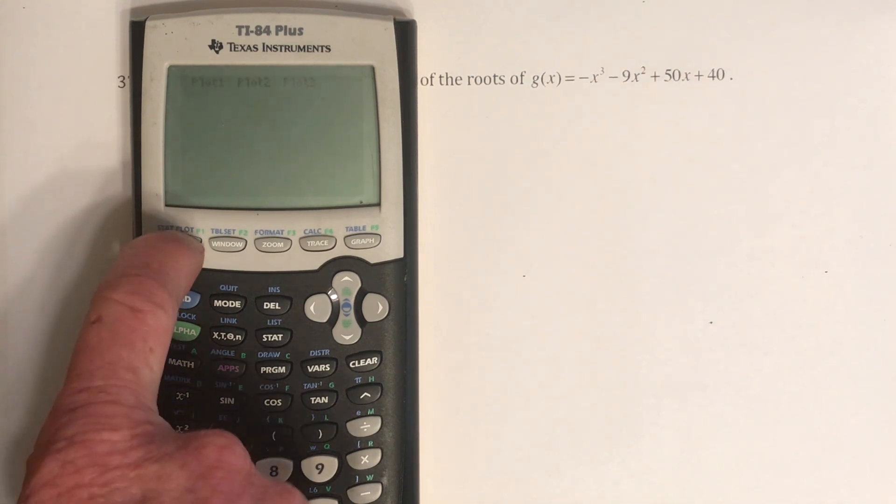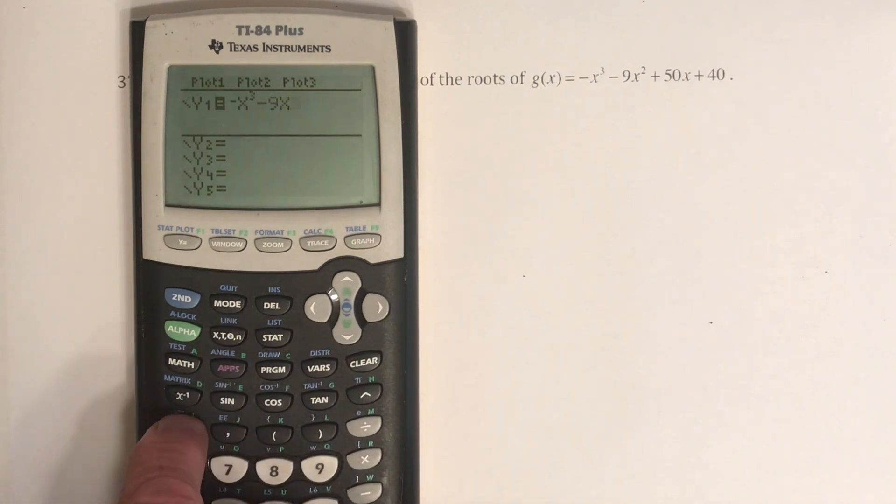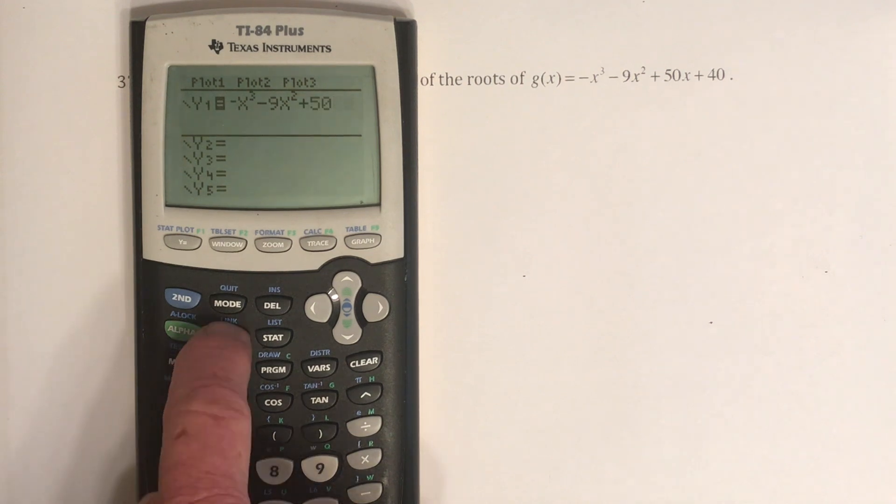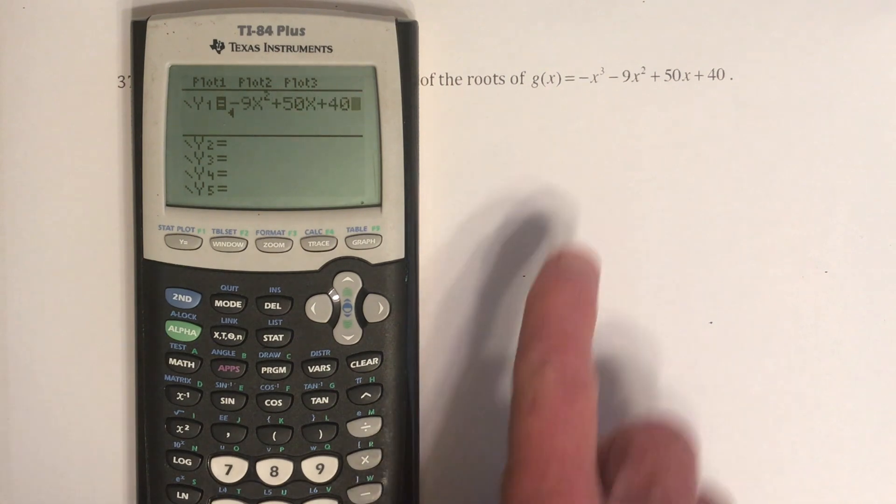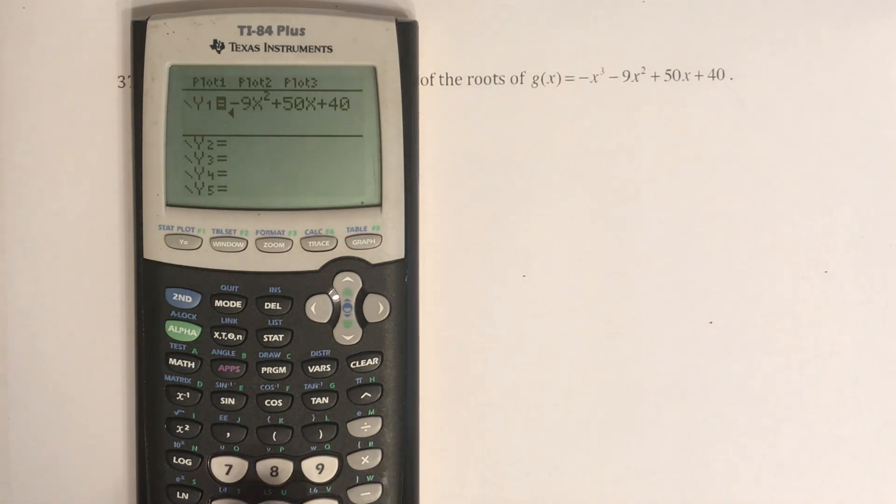So go to y equals, and then negative x is cubed, and then minus 9x squared plus 50x and plus 40. Now, since it has x cubed, that means that I'm looking for three solutions.